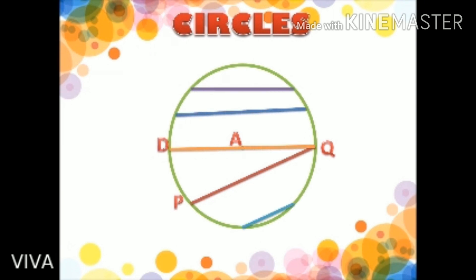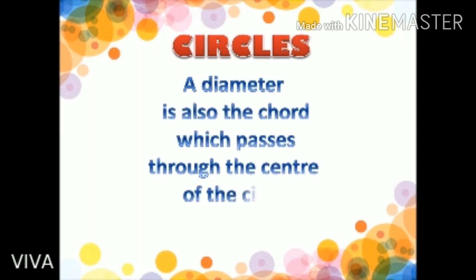What do we observe here? These are line segments with end points lying on the circle. But are these all diameters? No, not so. They may have end points lying on the circle, but they do not all pass through the center of the circle, except for line segment DQ. The other line segments are called chords of a circle. We see that the diameter is the longest chord of a circle. The diameter is also a chord which passes through the center of the circle.